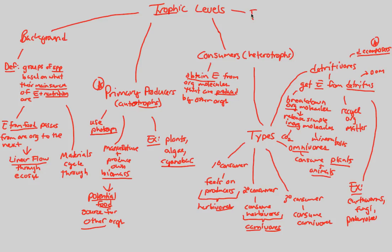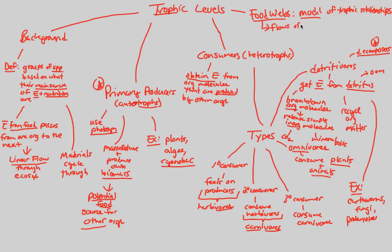The last thing to understand about trophic levels is food webs. We've talked about food webs before, but to reiterate: a food web is a model of trophic relationships. Things can get quite complex quickly, from primary to secondary to tertiary consumers, and back to decomposers. A food web models the flows of energy and matter throughout the ecosystem. Because matter and energy cannot be created nor destroyed — only transferred or converted — that's what we observe throughout these trophic levels in ecosystem ecology.